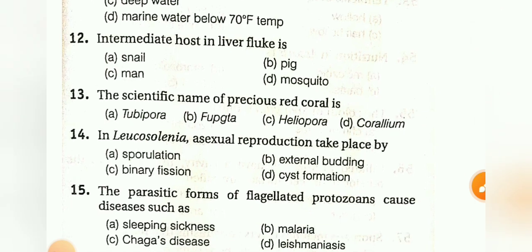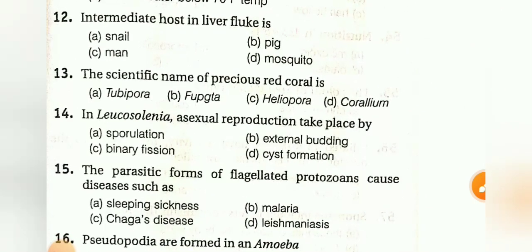In Leucosolenia, asexual reproduction takes place by: sporulation, external budding, binary fission, or cyst formation. The answer is external budding.